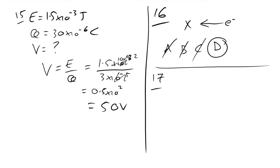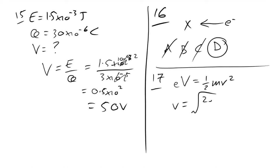Question 17: ionisation potential. The energy of an electron accelerated through potential V is eV = (1/2)mv². Rearranging for speed: v = √(2eV/m). The answer is D.